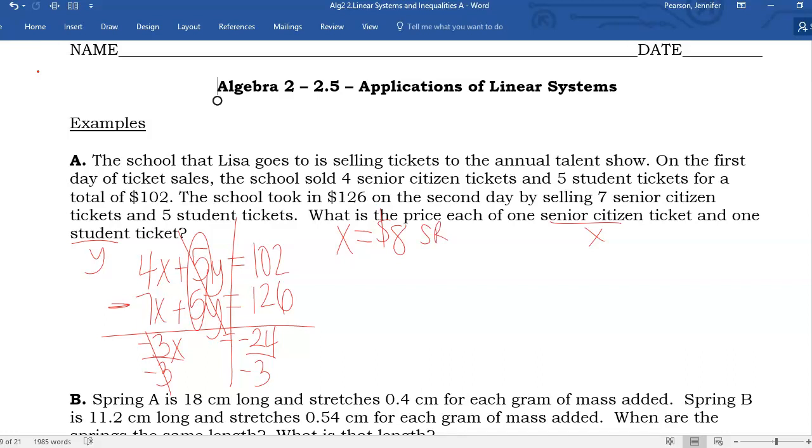We can substitute that eight back in for X. I can go top equation, I can go second equation to figure out Y or student price. Four times eight is 32. I'm going to just write minus 32 on each side rather than rewriting it. Five Y equals 70.